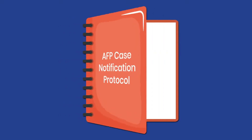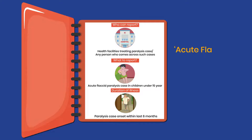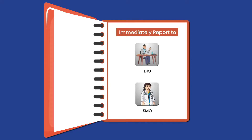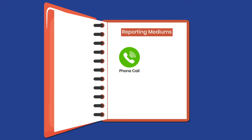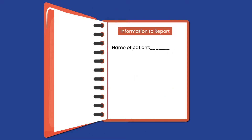All health facilities treating cases of paralysis, or any person who comes across such cases, should report cases having paralysis onset within the last 6 months. Acute flaccid paralysis is a syndrome and cases should be reported irrespective of the clinical diagnosis. Immediately report AFP cases to DIO and SMO by fastest means like phone call, WhatsApp, email, or SMS. Information required includes the patient's name, age, and sex.